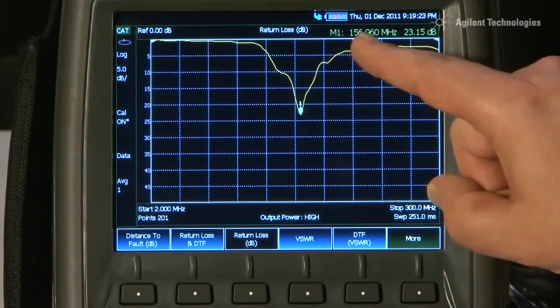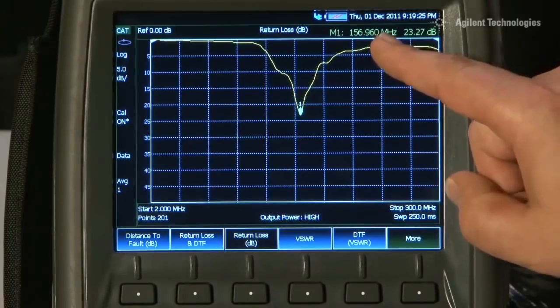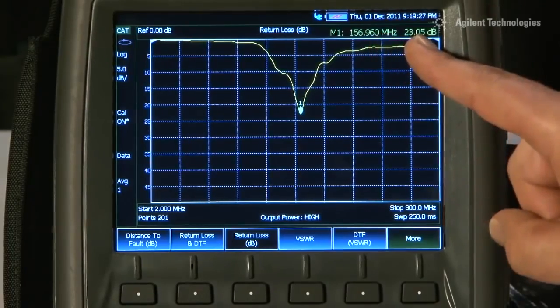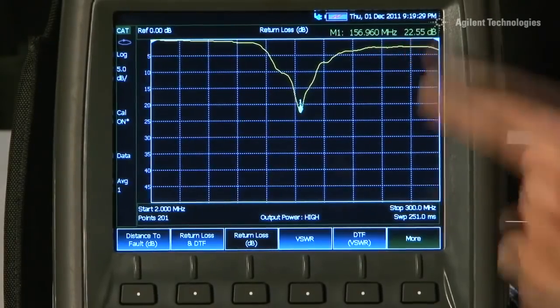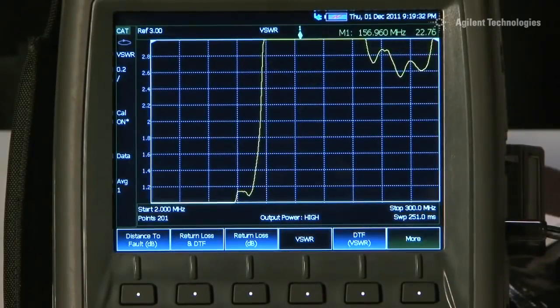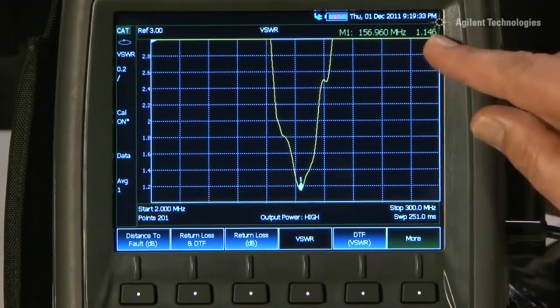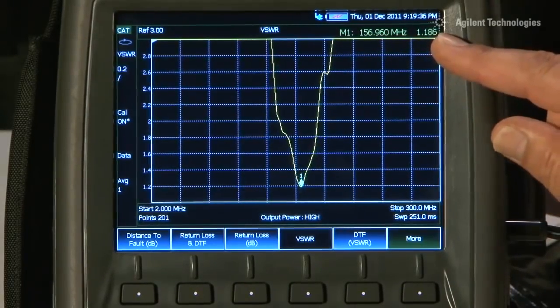and you can see that at 156.96 MHz, we have a 22 or 23 dB return loss. Or, if I want to see that in VSWR terms, we can see that is a VSWR of about 1.1 to 1.